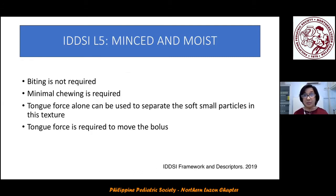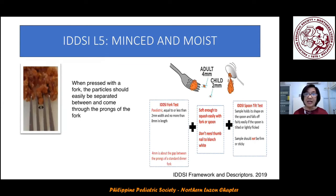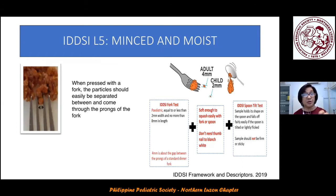For minced and moist, biting is not required and only minimal chewing is needed. Tongue force alone can separate the soft, small particles, and is also required to move the bolus for swallowing. When pressed with a fork, particles should easily pass through the prongs. The particle size is just 2 millimeters — approximately the size of the tip of a new crayon.